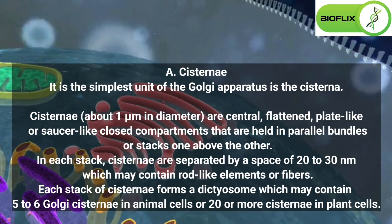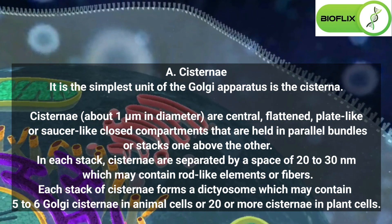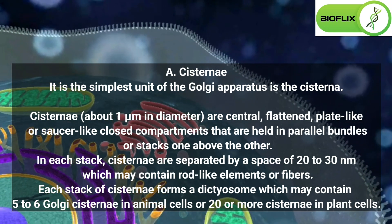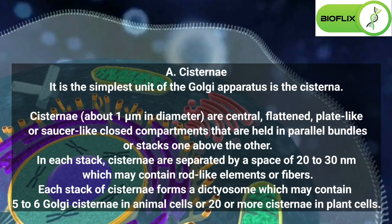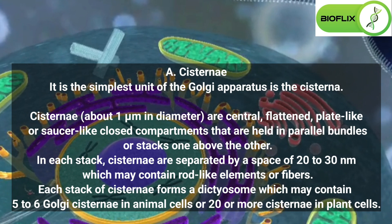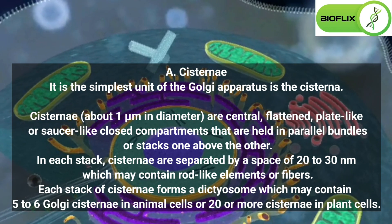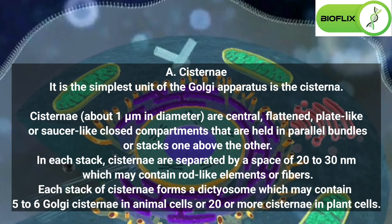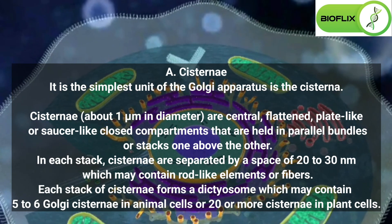Cisternae. The simplest unit of the Golgi apparatus is the cisterna. Cisternae, about one micrometer in diameter, are central, flattened, plate-like or saucer-like closed compartments that are held in parallel bundles or stacks one above the other. In each stack, cisternae are separated by a space of 20 to 30 nanometers which may contain rod-like elements or fibers.